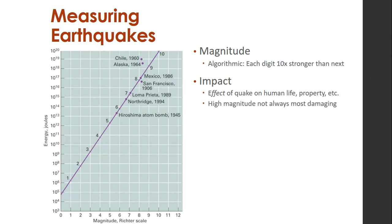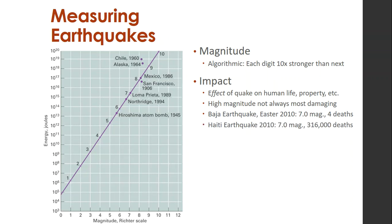High magnitude does not always mean the most damaging, because it depends on where it occurs, what types of structures are there, how many people are living there, and how deep the earthquake was. The Baja earthquake on Easter 2010 was 7.0 magnitude and resulted in four deaths. The Haiti earthquake in 2010 was the same magnitude and resulted in 316,000 deaths — different type of earthquake, more people concentrated around it, structures not ready for it, many collapses.